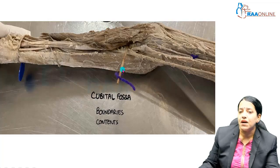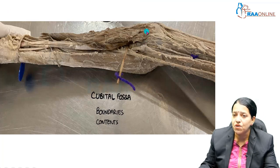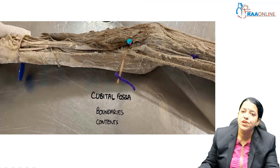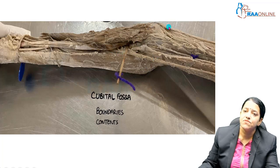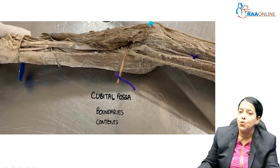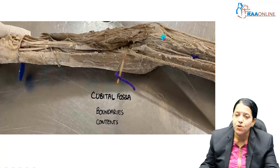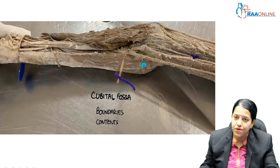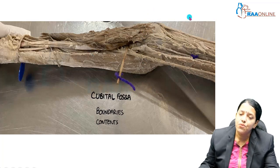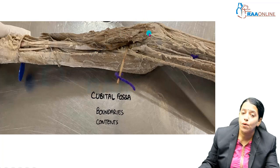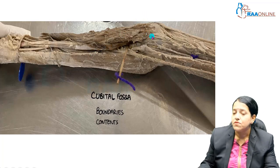This part is the forearm and this part is the arm. This is a specimen taken from the dissection hall. You can see this is the fossa we are talking about — this triangular space on the medial aspect of the elbow joint. This is the medial epicondyle, which is more prominent, and that's why it is called the medial epicondyle — because it is more prominent than the lateral epicondyle. At the medial epicondyle you have the pronator teres, as that is the common flexor origin.